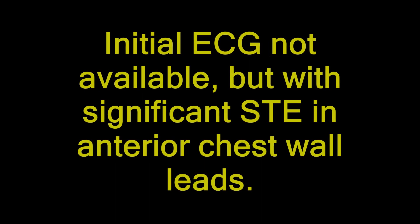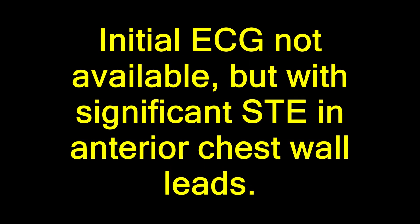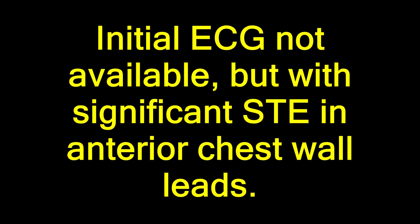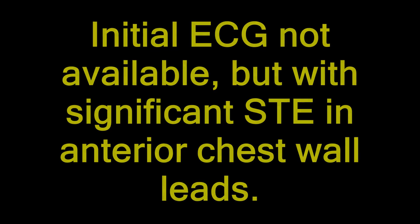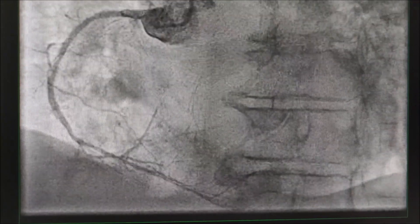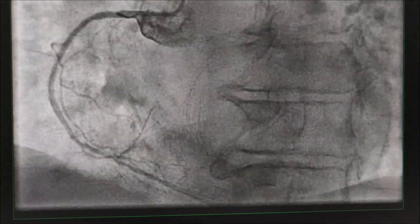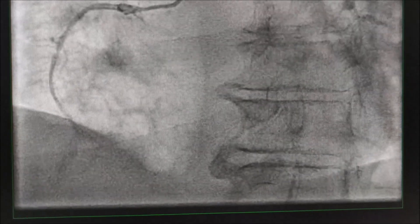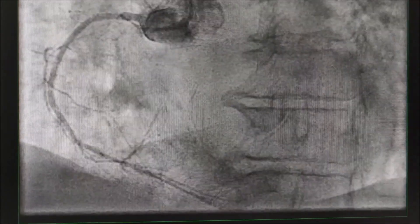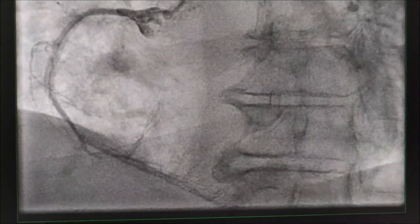The initial ECG showed ST elevation in the anterior chest wall leads. Here is her initial coronary angiogram. As you can see, the right coronary artery is well-developed from the proximal to distal part without any significant stenosis. There are also collaterals from the right coronary artery to the left coronary system.